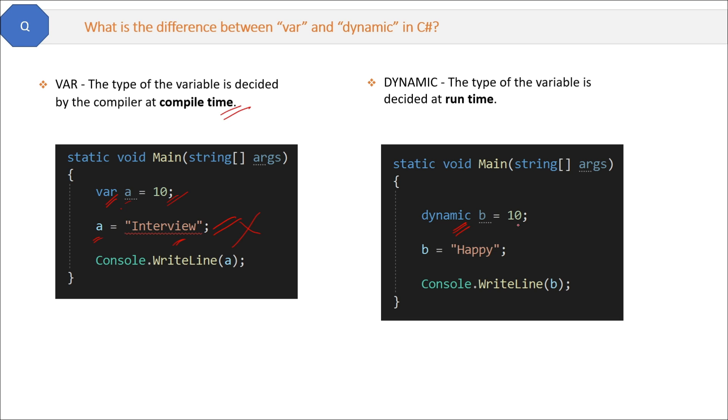First you assign b an integer value 10, then you are assigning b a string value 'happy'. When you build it, no compiler build error will come. And when you run this program,